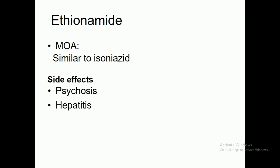The next second-line anti-tubercular drug is ethionamide. Its mechanism of action is similar to isoniazid, which I have already explained in previous slides. The side effects reported after administration of ethionamide include psychosis and hepatitis.